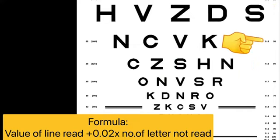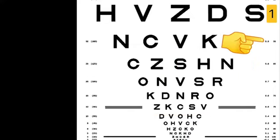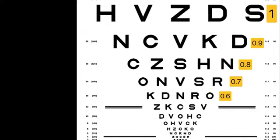The LogMAR value of each line are usually mentioned on the right side of the LogMAR chart. Like topmost line is 1 log, below to that is 0.9, then 0.8, then 0.7 and so on.